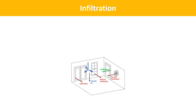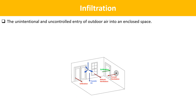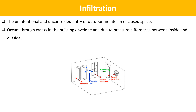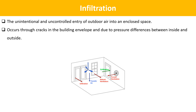The next term is Infiltration. The unintentional and uncontrolled entry of outdoor air into an enclosed space is called infiltration air. Infiltration occurs through cracks in the building envelope and due to pressure differences between inside and outside. Infiltration rates vary throughout the year and are greater in winter when the temperature difference between inside and outside is greater.